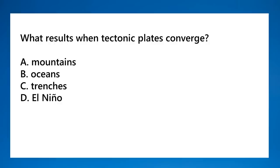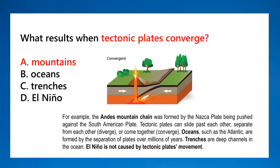What results when tectonic plates converge? That is mountains. For example, the Andes mountain chain was formed by the Nazca Plate being pushed against the South American Plate. When plates separate (divergent), oceans are formed. Trenches — deep channels in the ocean — are also formed by plate tectonics; the famous Mariana Trench is in the Pacific Ocean. El Niño is not caused by tectonic plate movements.